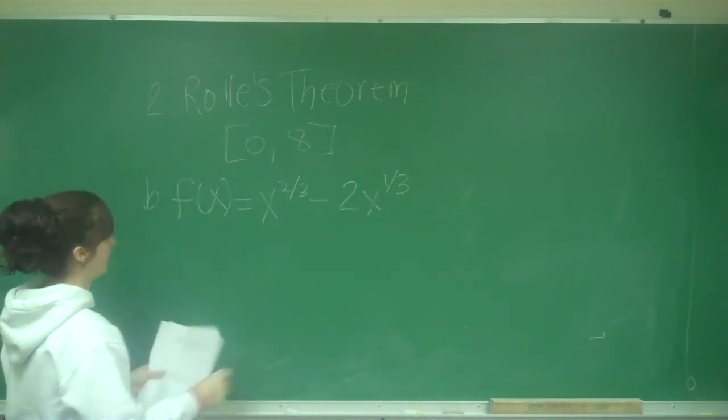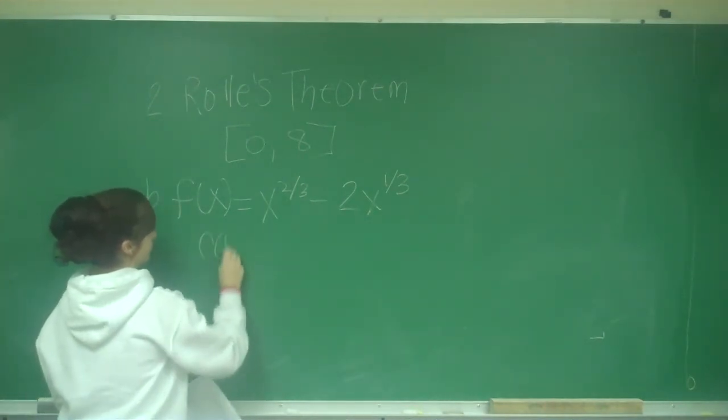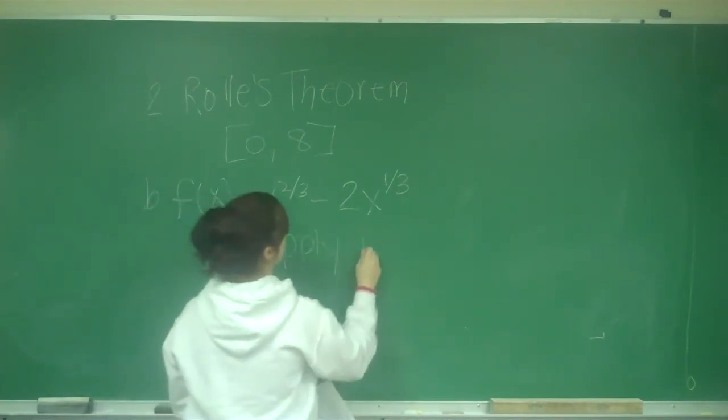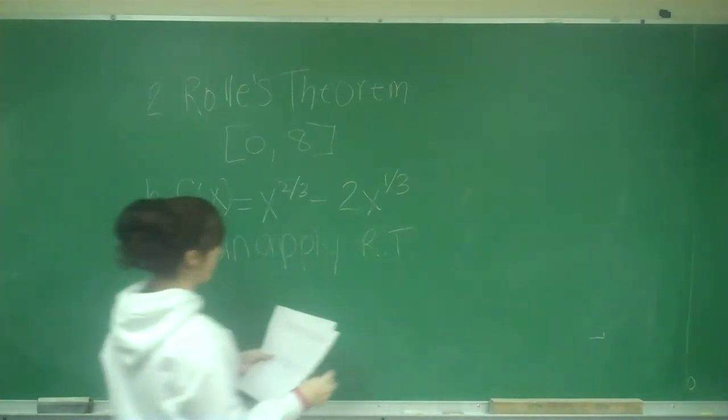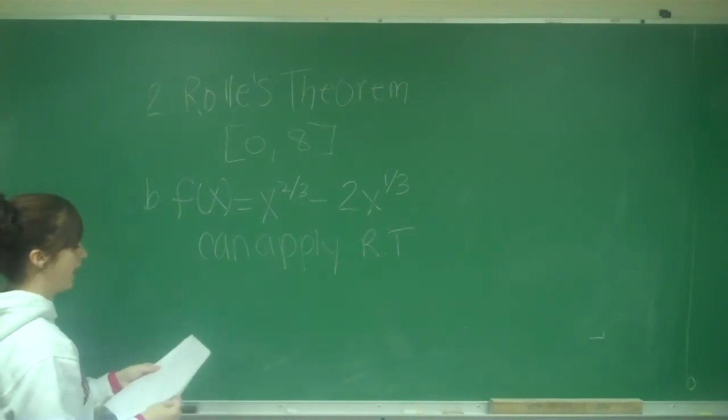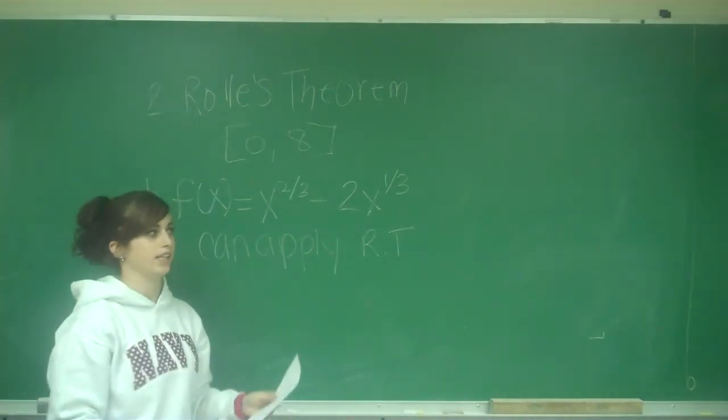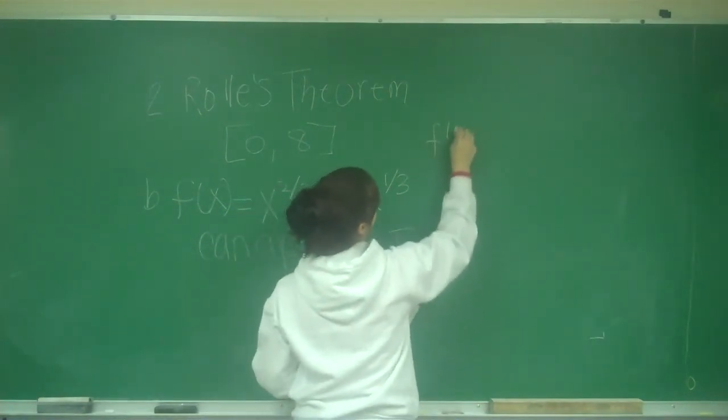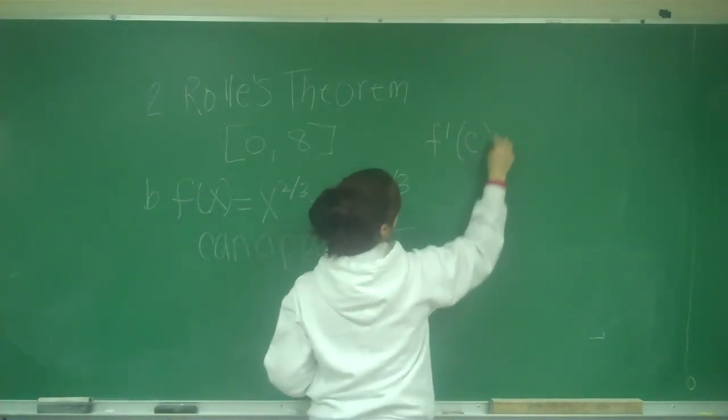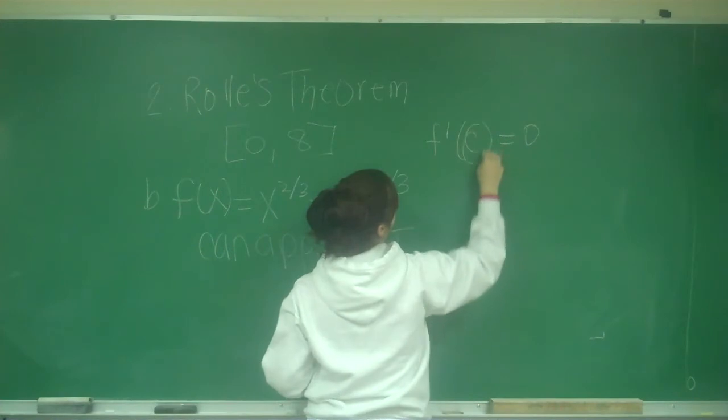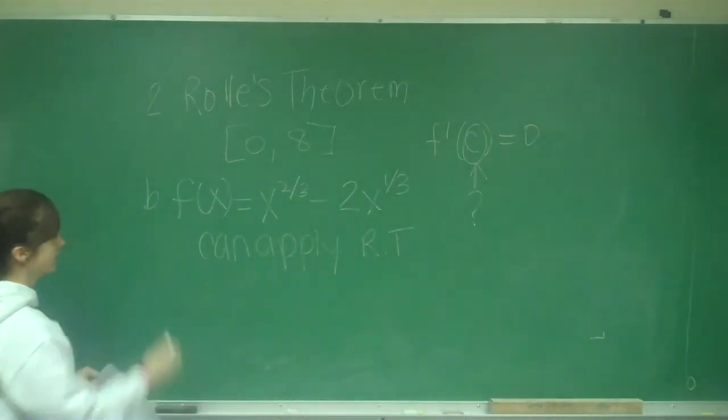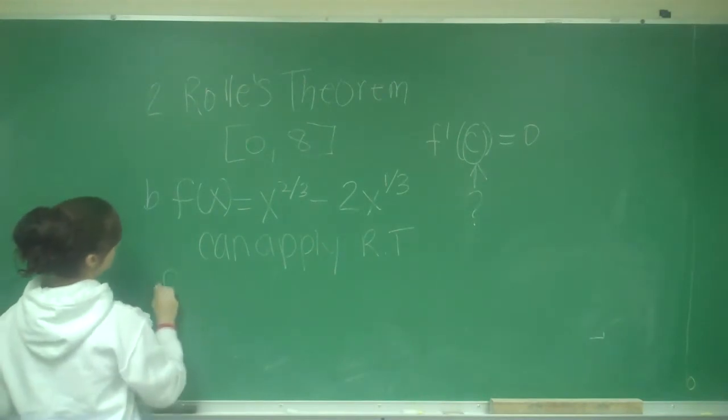So now that we know that we can apply Rolle's theorem, we need to find a value of c that satisfies it. Rolle's theorem says that there's a value that f prime of c equals 0, and the c value is what we need to find. So we need to find the derivative.